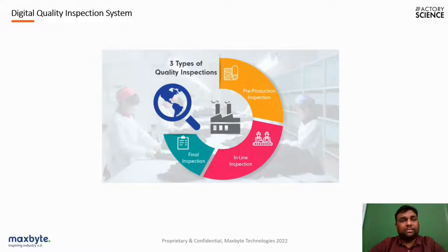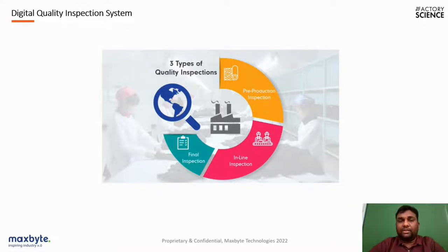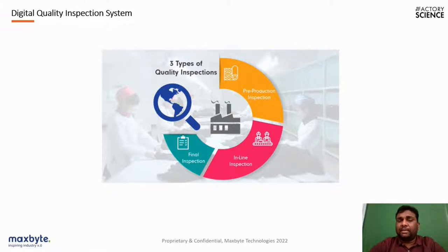A digital quality inspection system consists of three types: pre-production inspection, inline inspection, and final inspection. Pre-production inspection deals with inspecting raw materials for their dimensions and physical properties to verify they are suitable for manufacturing. Inline inspection involves on-the-fly validation of parts during manufacturing using camera-based quality inspection, and final inspection generates digital reports once parts are manufactured.